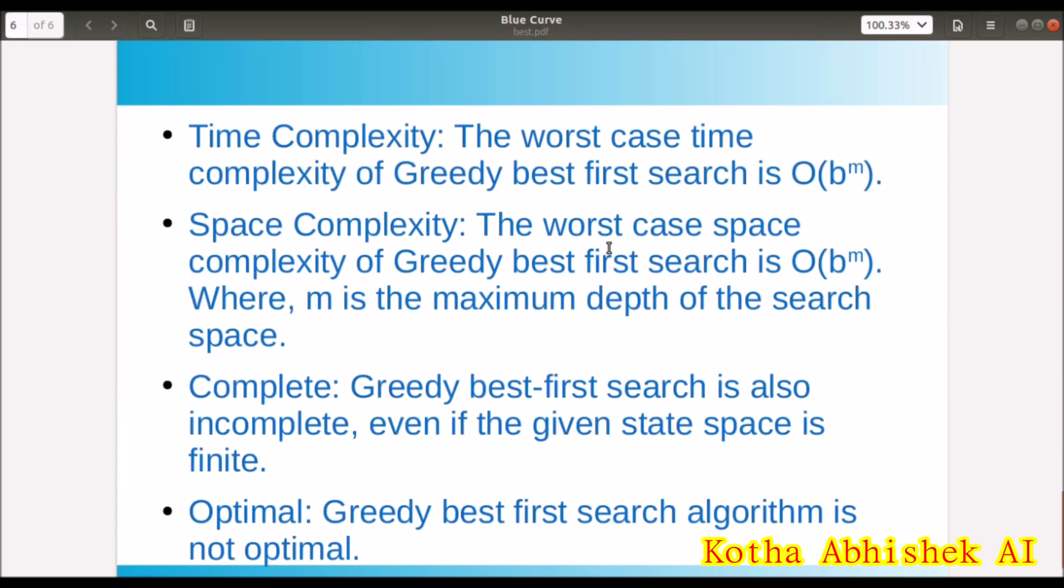Now let's see these properties. Time complexity. Now M is the maximum depth. So we will check the maximum depth. So we will check the order of b to the M. Same with space complexity.